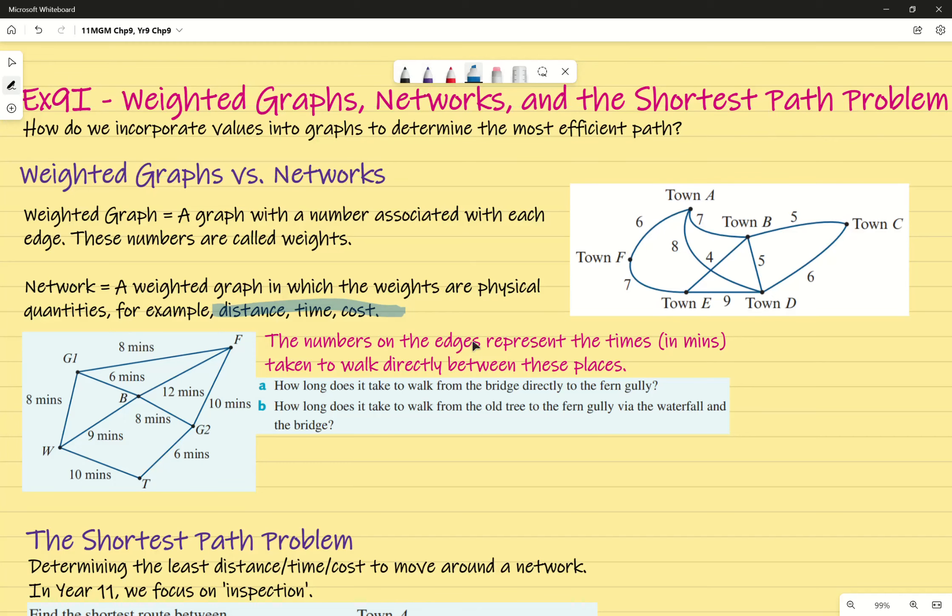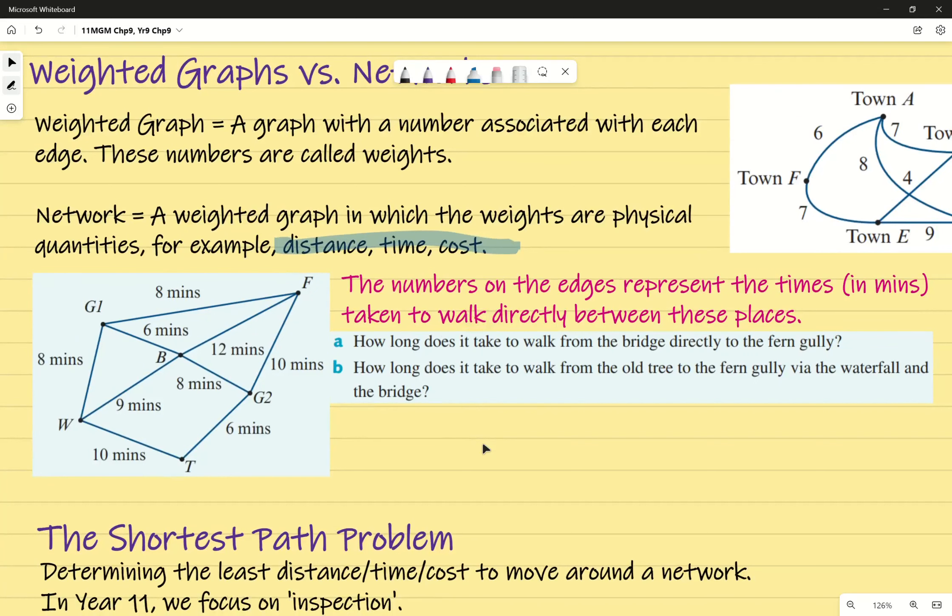So I've taken this example from the textbook, but there is a section that I've cut out just to make it a little bit easier for us to look at. I've just essentially removed what each one of these letters mean, but I'll go through them in a second. In this specific example, it says that the number on the edges represents the time in minutes taken to walk directly between these places. So in question A, it says how long does it take to walk from bridge directly to fern gully? I'll use B for bridge and then F for fern gully.